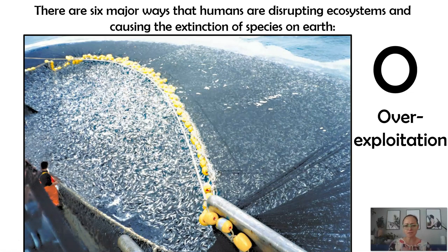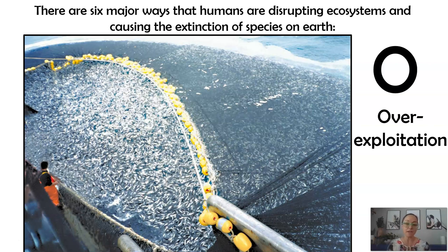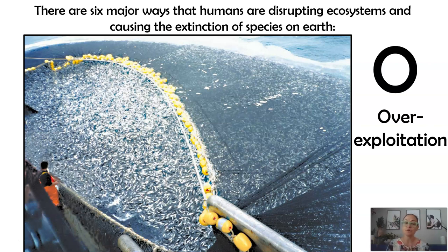The key part of over-harvesting is that we as humans are taking more individuals than can replenish naturally. Here's an example of over-harvesting fish. We take a lot of fish out of our oceans, so the death rate is greater than the birth rate. When more fish are dying because we're taking them and eating them than are being born, you're going to have a reduction in population size.